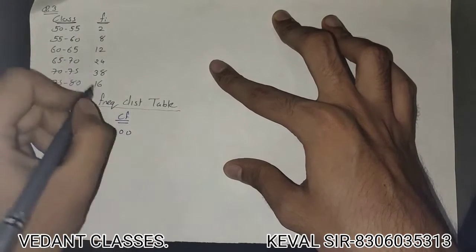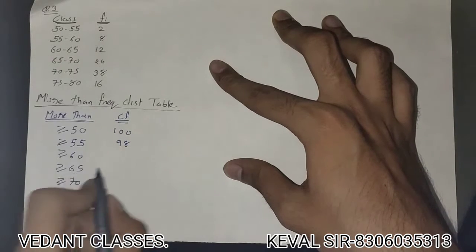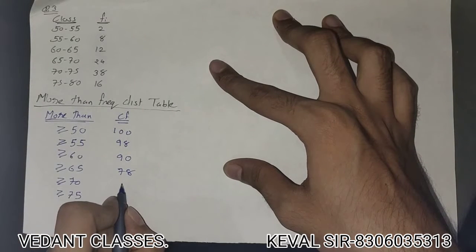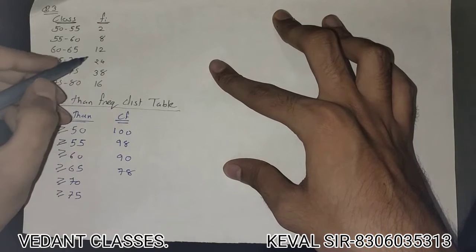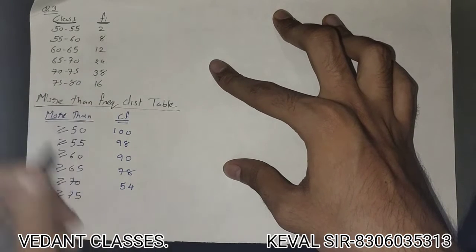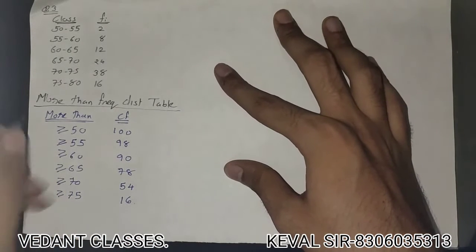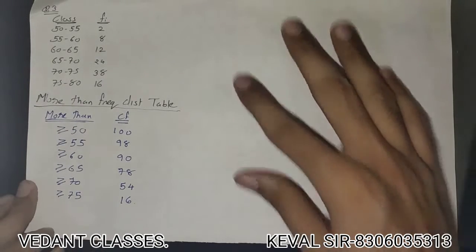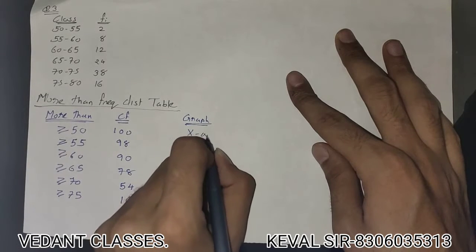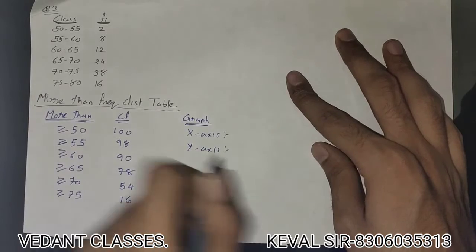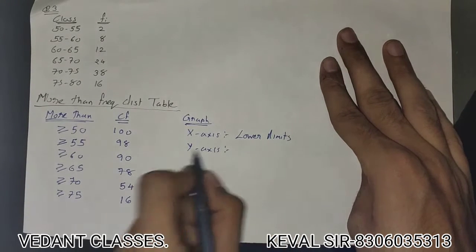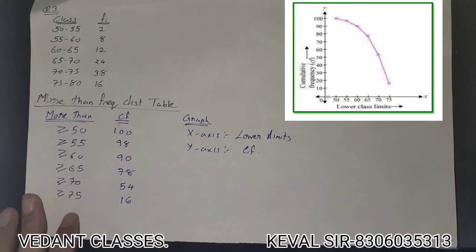The cumulative frequencies are calculated by subtracting from the total of 100: more than 50 → 100, more than 55 → 98, more than 60 → 90, more than 65 → 78, more than 70 → 54, more than 75 → 16. For the more-than ogive, use the lower limits on the x-axis and cumulative frequency on the y-axis.